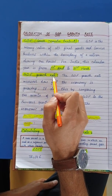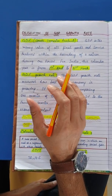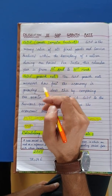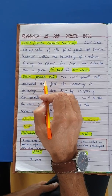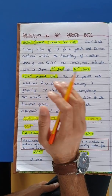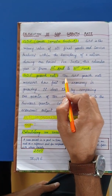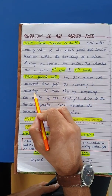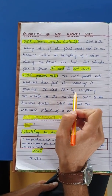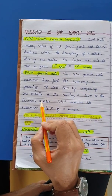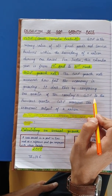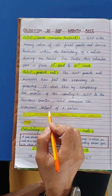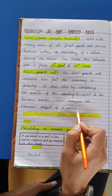Next, GDP growth rate. In the present situation, when we talk about GDP growth rate decreasing or increasing — how can we determine that? The GDP growth rate measures how fast the economy is growing. It does this by comparing one quarter of the country's GDP to the previous quarter. GDP measures the economic output of a nation.